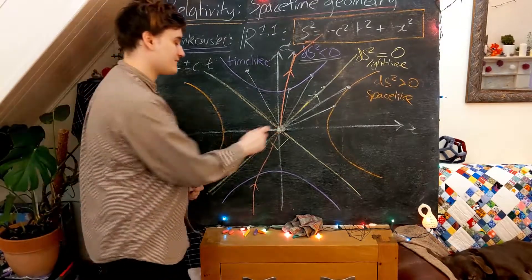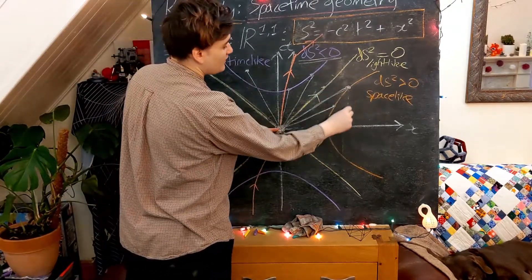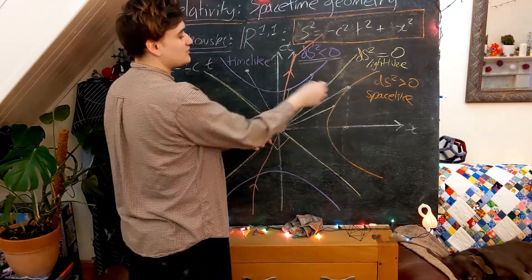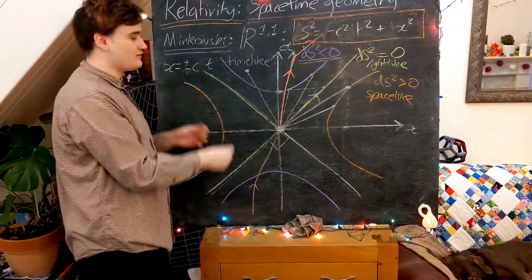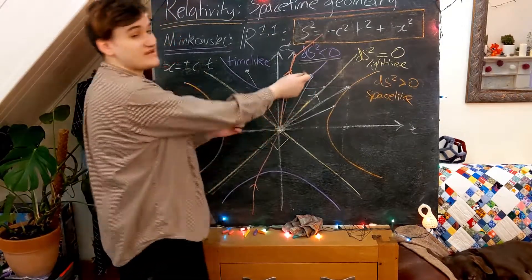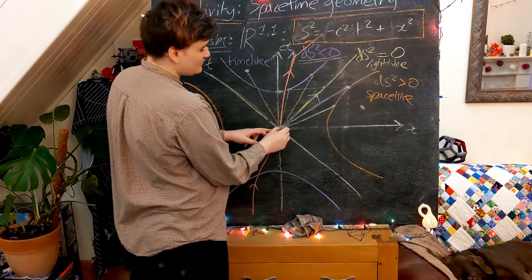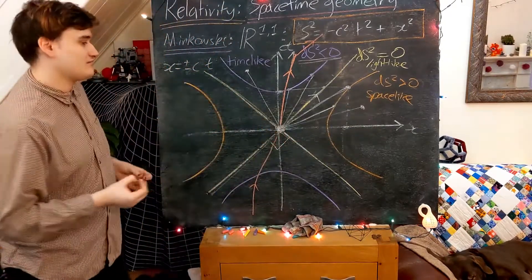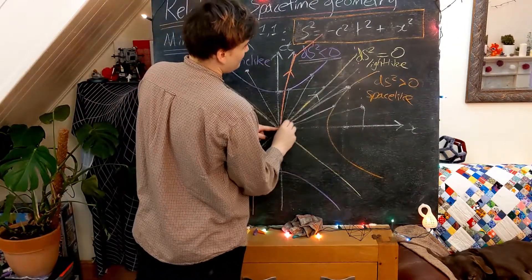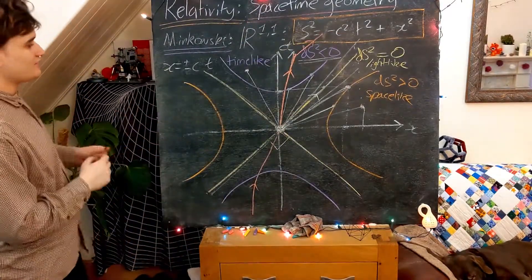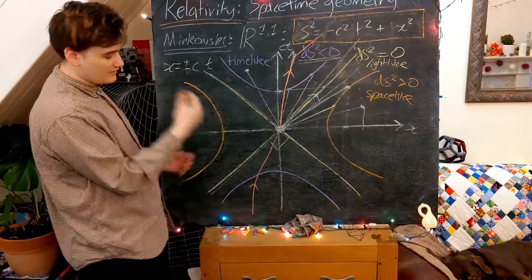To be clear about what this means: not being able to reach a space-like separated point means we cannot reach that specific point in spacetime. We could eventually get to that location in space, but we just couldn't get there quickly enough to arrive at the spacetime point specified by time t. The causal future represents all events you can reach in spacetime without travelling faster than the speed of light. If an event is space-like separated from your origin, there is no way to reach it without exceeding the speed of light.